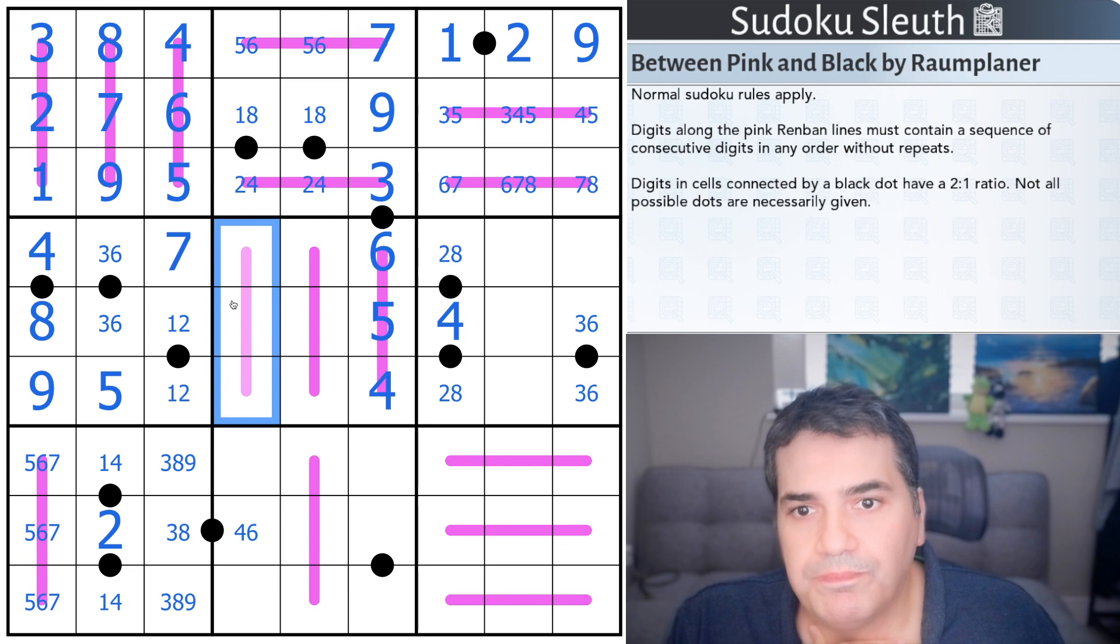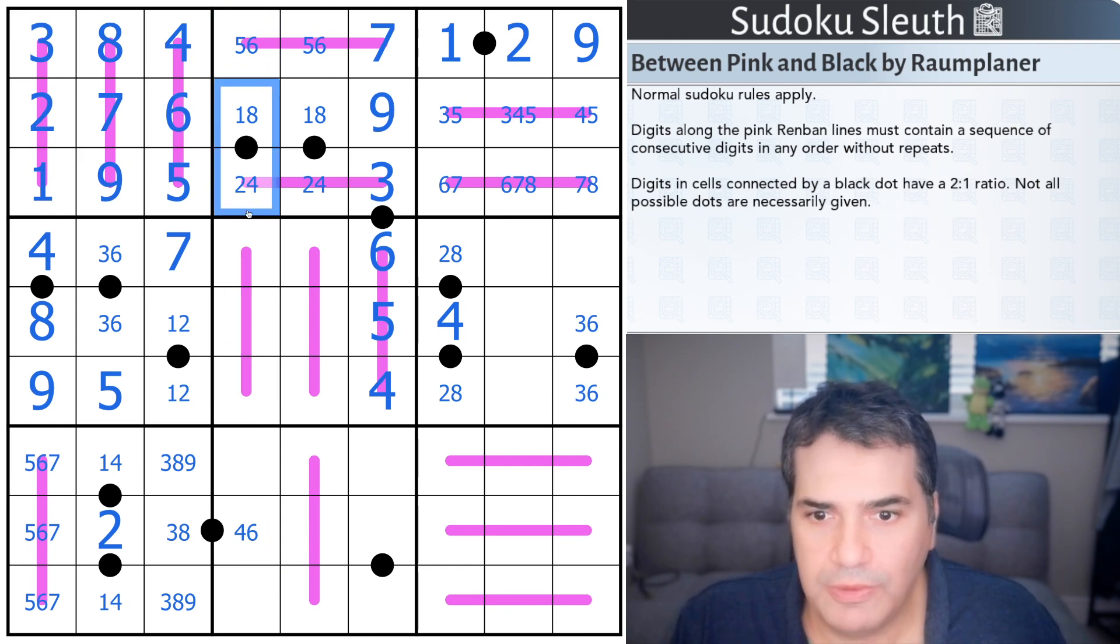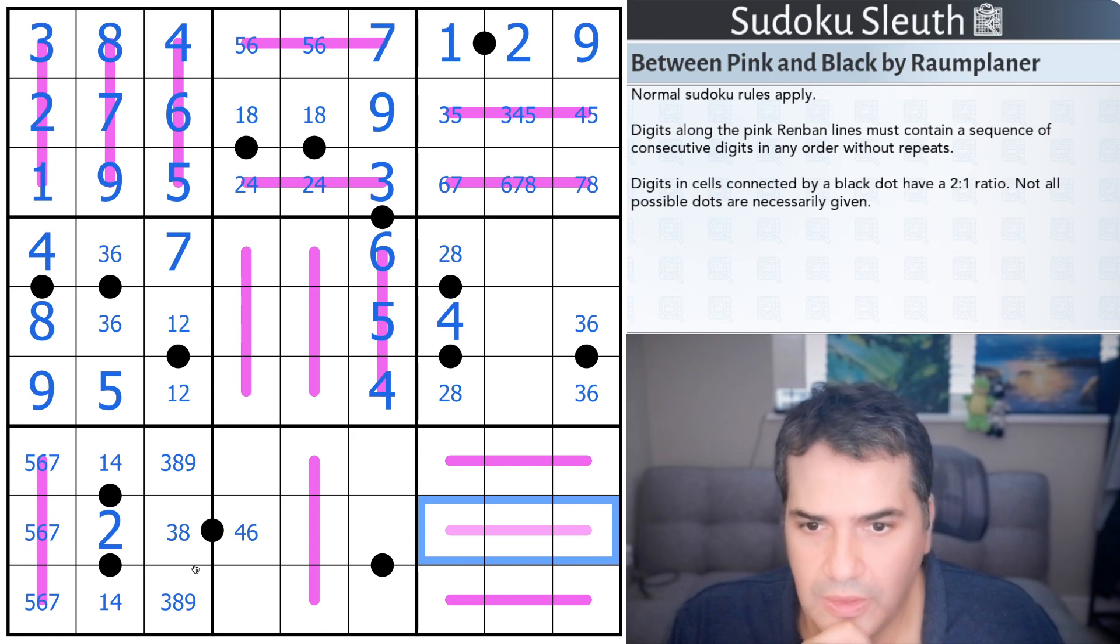So we know that we don't have 4, 5, 6. So essentially, it's either 1, 2, 3. If it is 1, 2, 3, that would be 4, 8. That would be 6. That would be 5. If it's 7, 8, 9, that would be 1, 2. And then I guess these two are still open. Actually, hang on. This could be useful. This is not 1, 2, 3. It's either 7, 8, 9, or it's 4, 5, 6. Now, it can't be 4, 5, 6, because it eliminates this cell, all of the options.